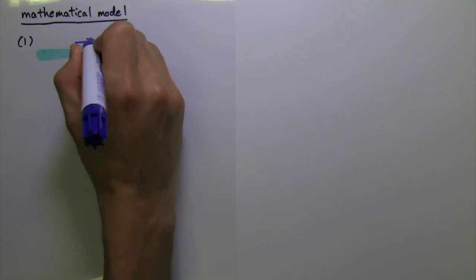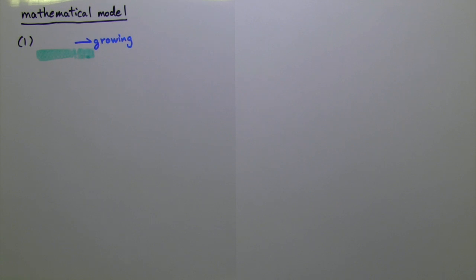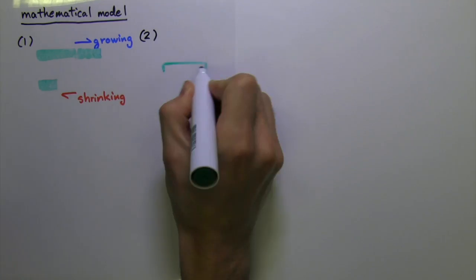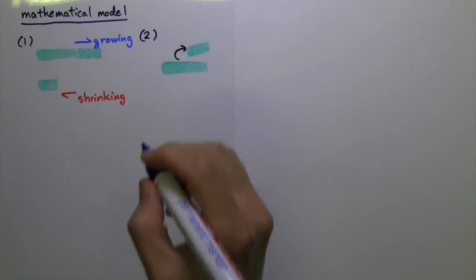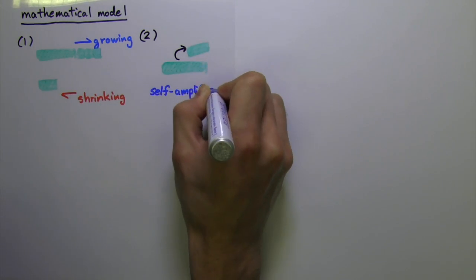The two ingredients are: first, the microtubules growing and shrinking. Second, a pre-existing microtubule making a new microtubule, which we call self-amplification.